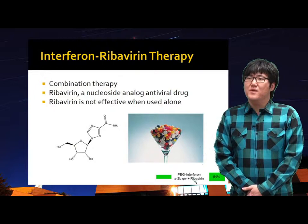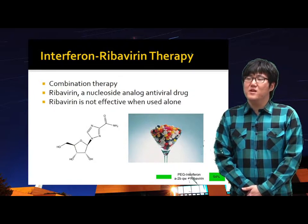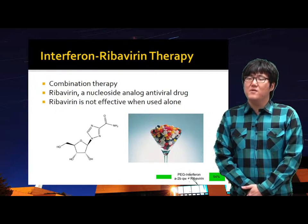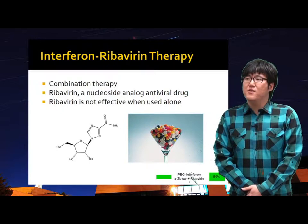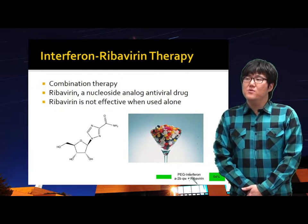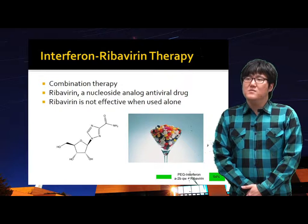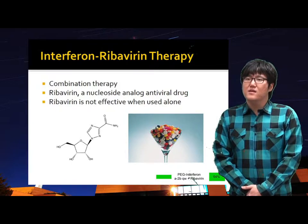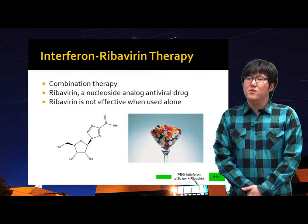As treatment of Hepatitis C evolved, treatment changed from interferon monotherapy to combination therapy of interferon and ribavirin. Although ribavirin is not effective against Hepatitis C when used alone, ribavirin plays an important role in combination treatment. The mechanism is not clearly discovered, but it is clear that adding ribavirin boosts cure rates and reduces the risk of relapse.